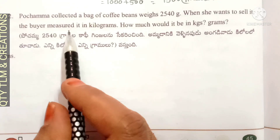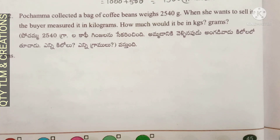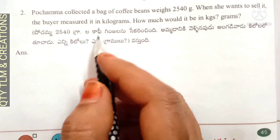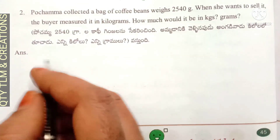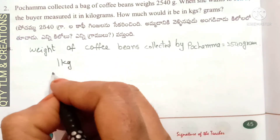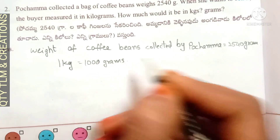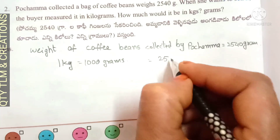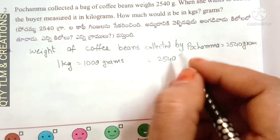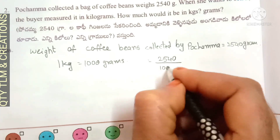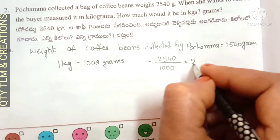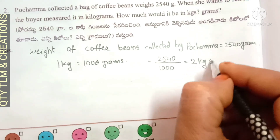Next question: Pochama collected a bag of coffee beans weighing two thousand five hundred and forty grams. When she wants to sell it, the buyer measured it in kilograms. How much would it be in kilograms and grams? Weight of coffee beans collected by Pochama is 2540 grams. We know that one kilogram is equal to 1000 grams. So 2540 grams divided by 1000 is equal to 2 kg 540 grams.